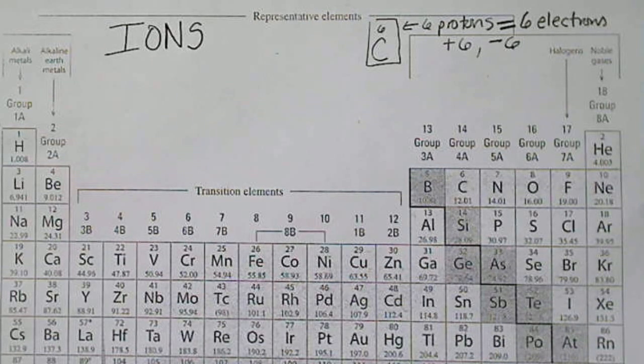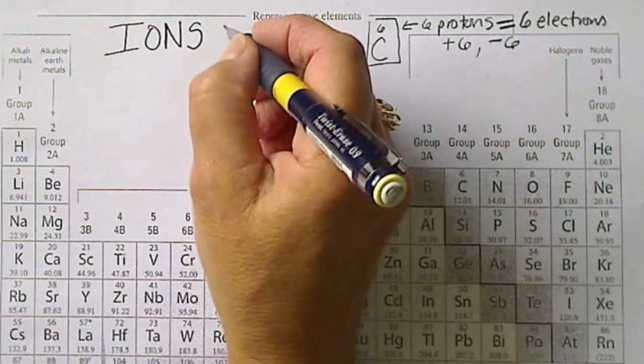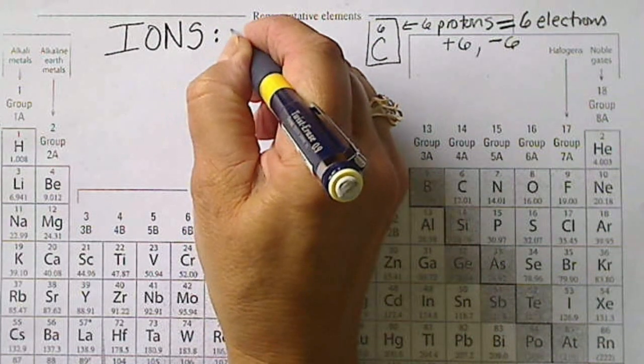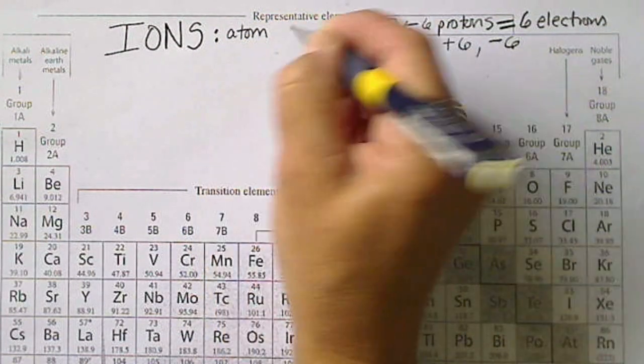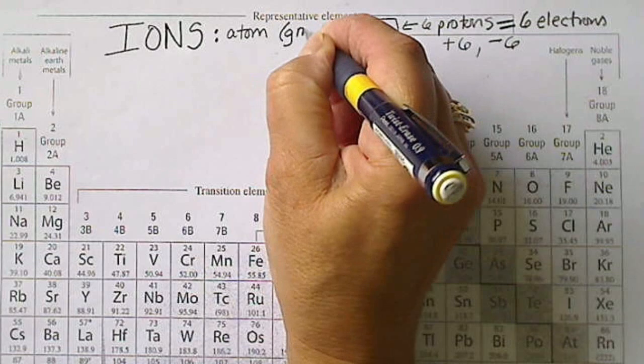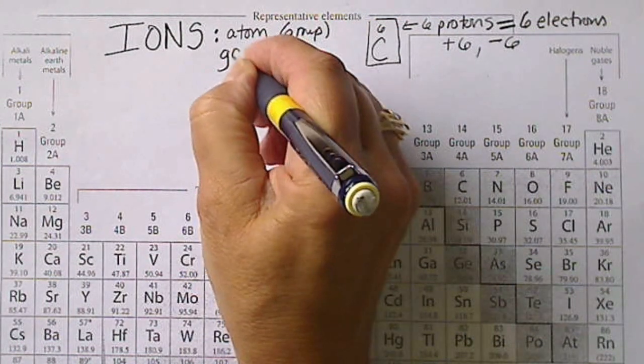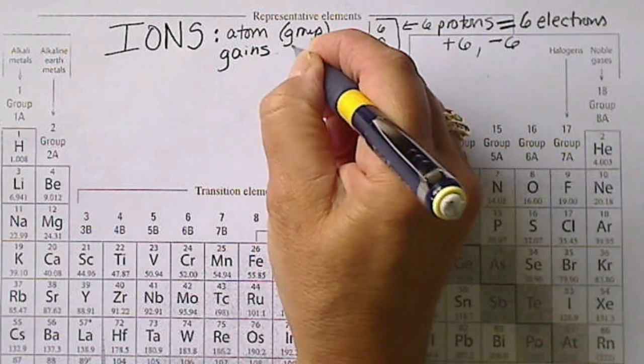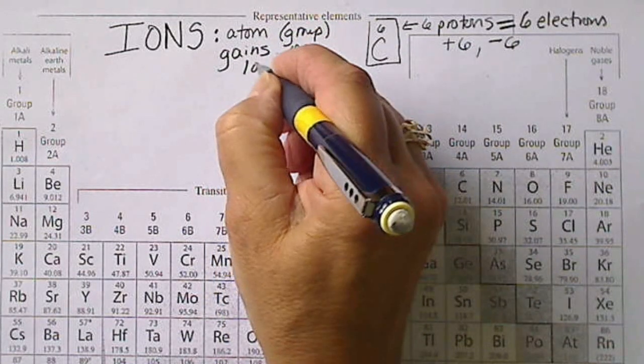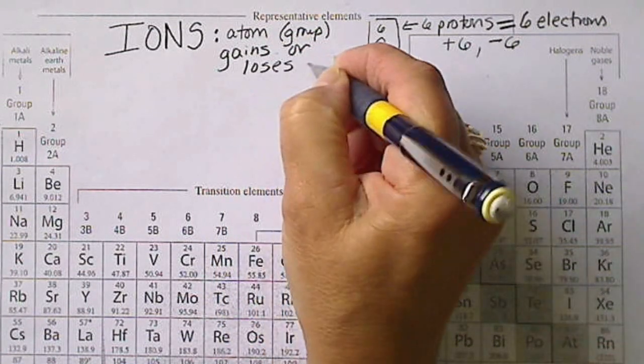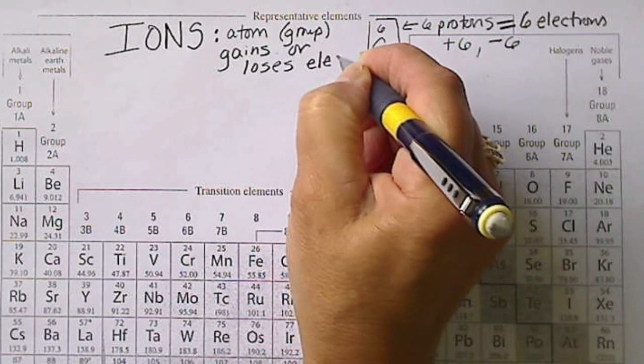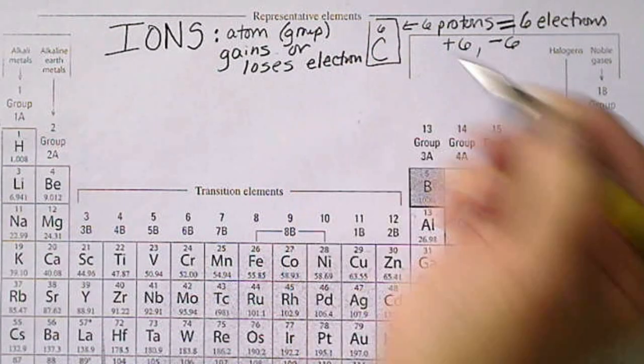We're going to see that ions can be formed, and that is a column on the blue sheet. An ion is formed when an atom or a group of atoms gains or loses electrons. So atoms or groups of atoms may have a positive or a negative charge.